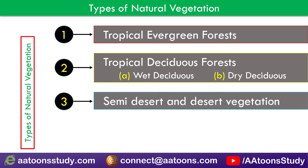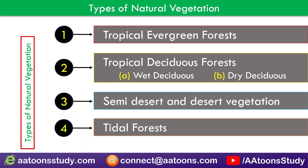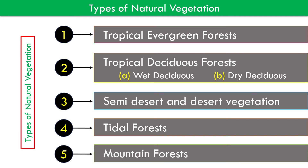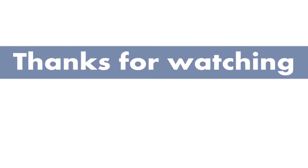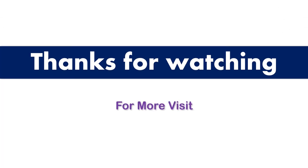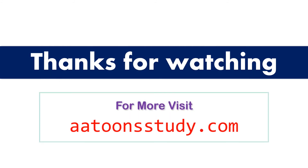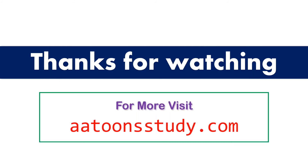The remaining types of natural vegetation include semi-desert and desert vegetation, tidal forests, and mountain forests.